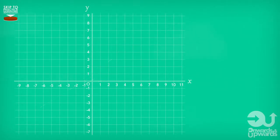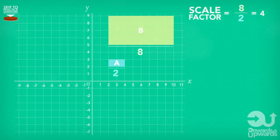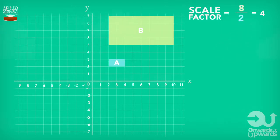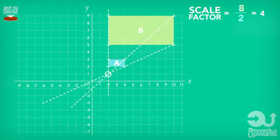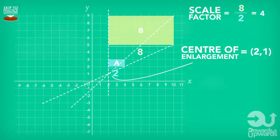An example question: shape B is an enlargement of shape A. Find the scale factor and the center of enlargement. First, we find the scale factor by choosing a length from the enlarged shape and dividing it by its corresponding side on the original shape. In this case, eight divided by two gives us four. Next, we join corresponding corners with lines. They cross at the coordinate where x is two and y is one on our axes. So our final answer is a scale factor of four and the center of enlargement is the coordinate point (2, 1).